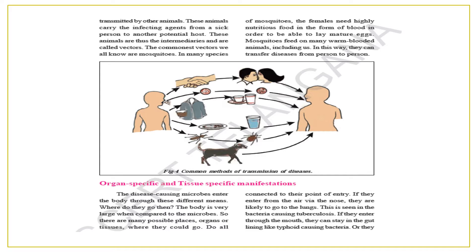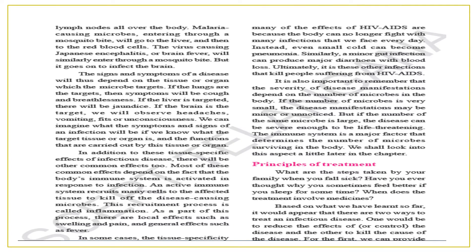This is all connected to the points of entry. If they enter from the air via the nose, they are likely to go to the lungs — as seen in the bacteria causing tuberculosis. If they enter through the mouth, they can stay in the gut lining, like typhoid-causing bacteria. Malaria-causing microbes entering through a mosquito bite go to the liver and then to the red blood cells. The virus causing Japanese encephalitis similarly enters through a mosquito bite.